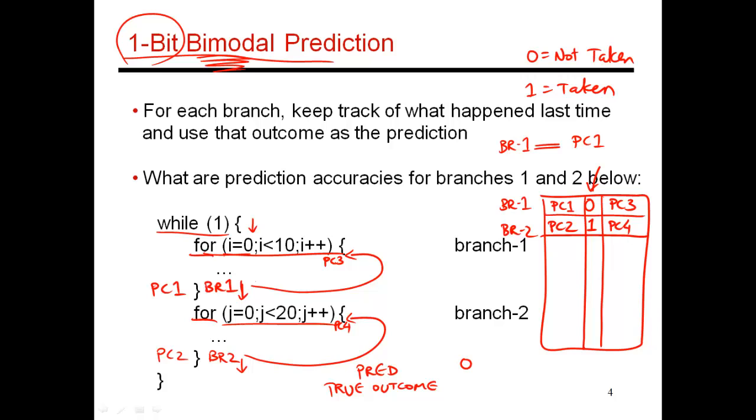And why did it do that? Because the last time I was in this while loop iteration, and the last time I went through this for loop, at the very end of the for loop, the branch was not taken when I exited. And that is what has been recorded in this table over here.